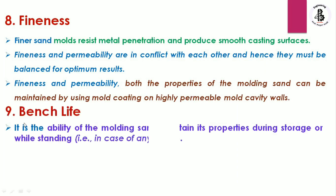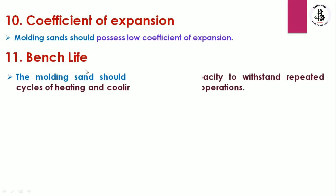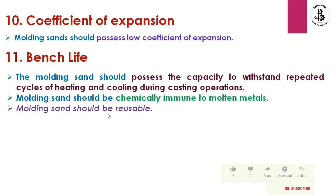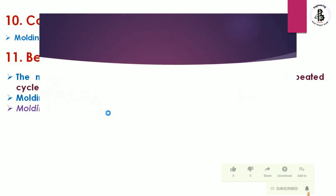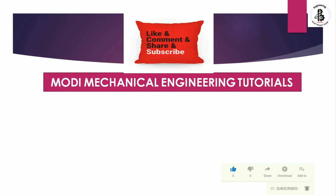Bench life is the ability of the molding sand to retain its properties during storage or while standing in case of delays. Molding sand should also possess a low coefficient of expansion, the capability to sustain repeated cycles of heating and cooling during casting operations, be chemically immune to molten metals, and be reusable. If you like this video, please subscribe and share more mechanical engineering tutorials. Thank you.